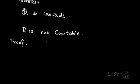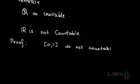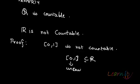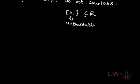Essentially, if I can prove for the interval (0, 1) that (0, 1) is not countable, then that would mean R is not countable — because (0, 1) is a subset of R, and if this subset is uncountable, then R will be uncountable. So let us try to prove that (0, 1) is not countable.